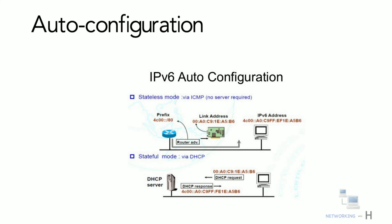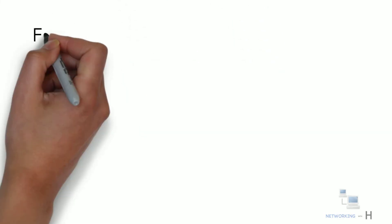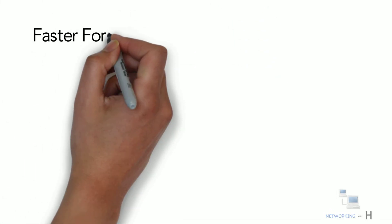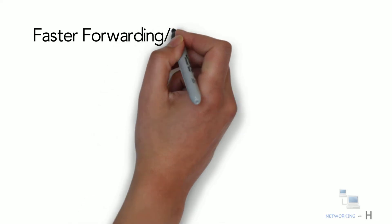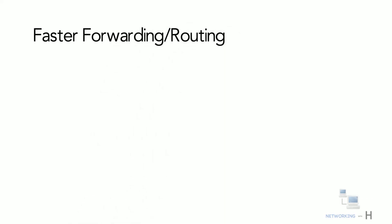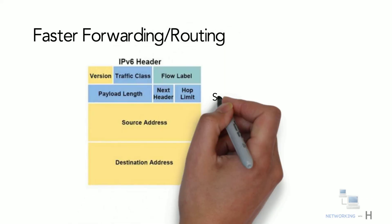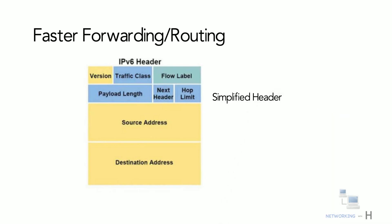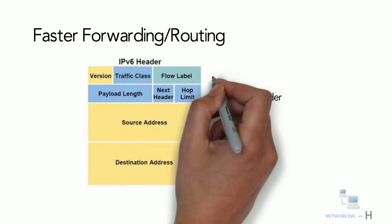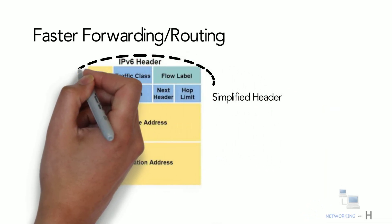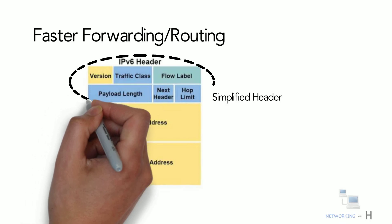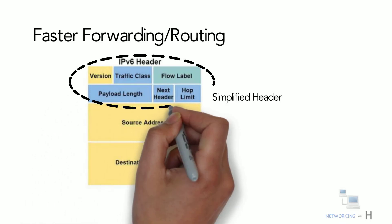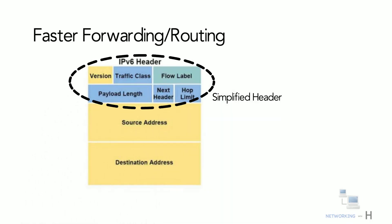The next feature is faster forwarding and routing. A simplified header puts all unnecessary information at the end of the header. The information contained in the first part of the header is adequate for a router to make routing decisions, making the routing decision as quickly as looking at the mandatory header.